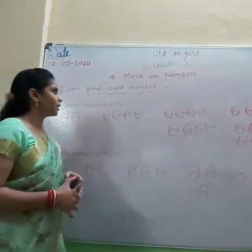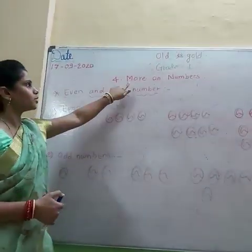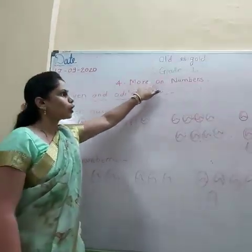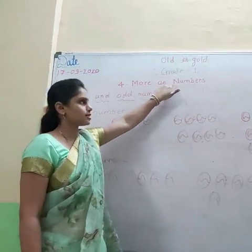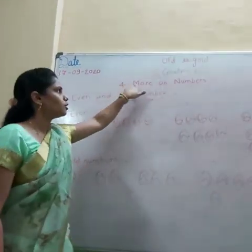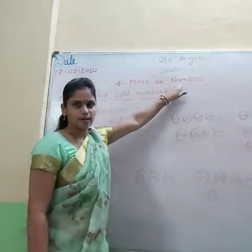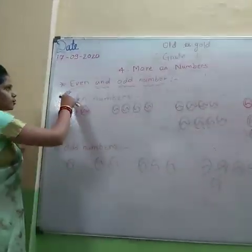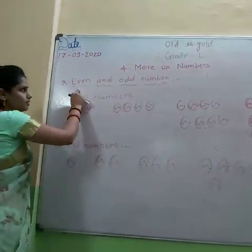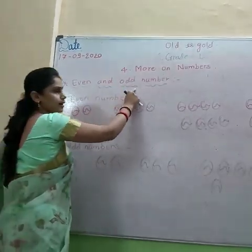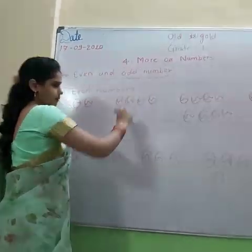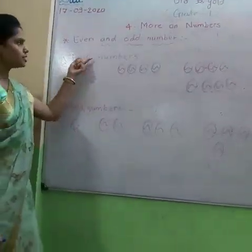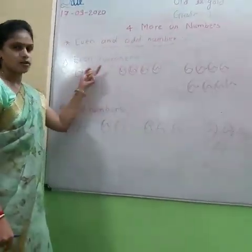Good morning children. Today we are going to see more on numbers. Lesson number 4: More on numbers. First of all, even numbers and odd numbers. So first, even numbers.